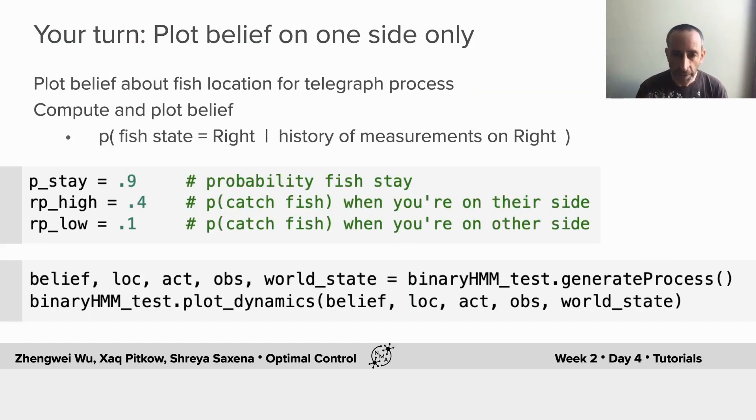Now it's your turn. You can plot those beliefs using the code that we've provided. You'll follow the telegraph process and you'll update the beliefs according to the hidden Markov model recurrence equations. That's all coded for you. All you have to do is run this so that you can see what the dynamics look like. And you can do that by setting the parameters here, the probability of staying and the probability of catching fish, and running these two lines of code with those parameters in there. Okay, have fun.